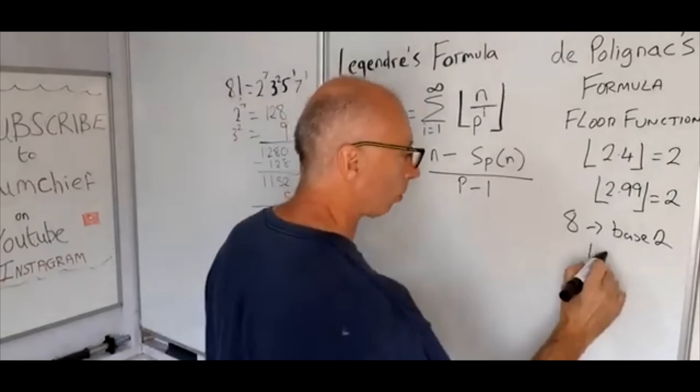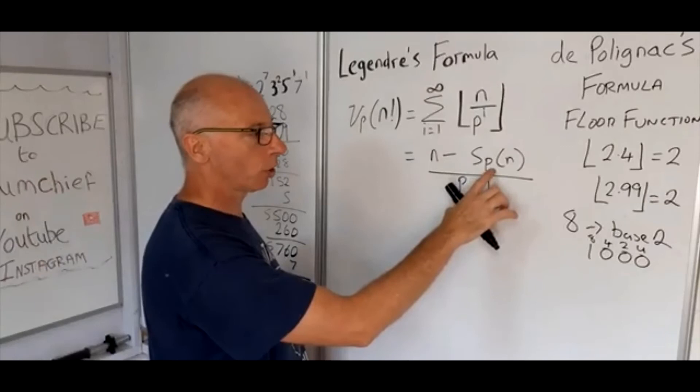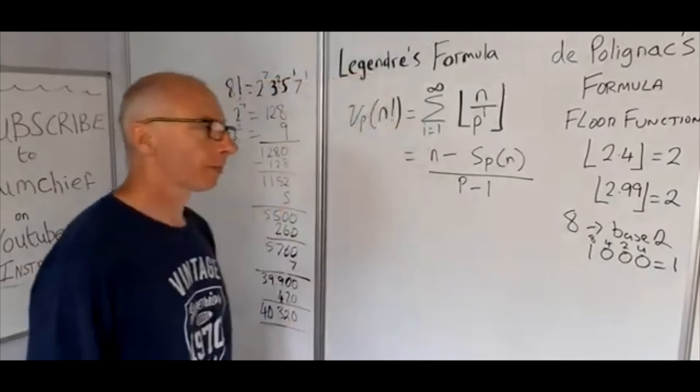So for example, if we take the number 8 and do that in base 2, i.e. binary, we end up with 1, 0, 0, 0: units, 2's, 4's, and 8's. So the sum of the digits of the base 2 of this prime number here, that equals 1.